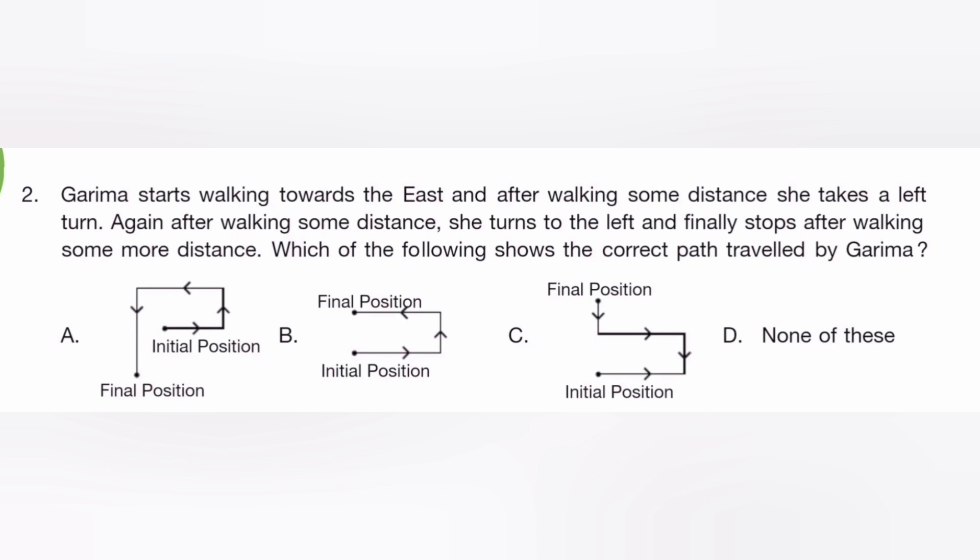Garima starts walking toward the east and after walking some distance she takes a left turn. Again after walking some distance she turns to the left and finally stops after walking some more distance. Which of the following shows the correct path traveled by Garima? The answer is B.